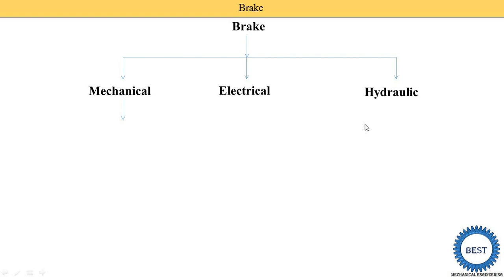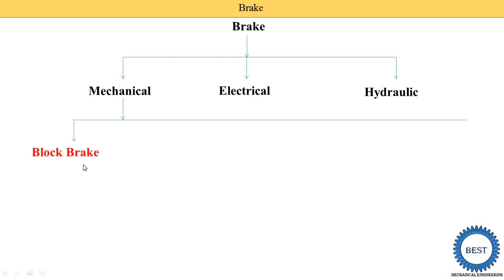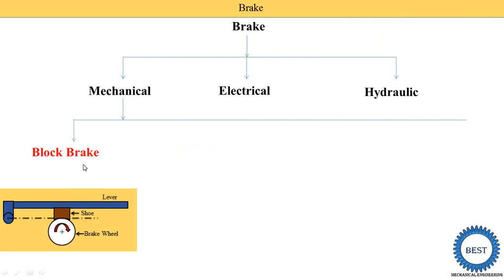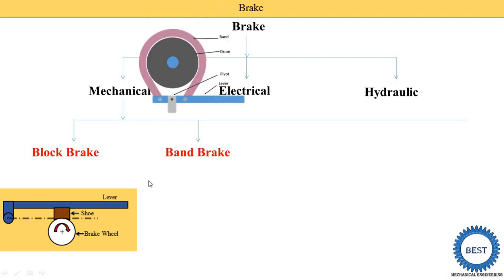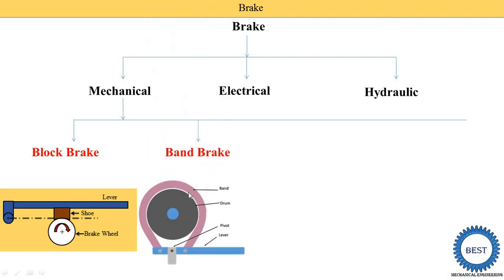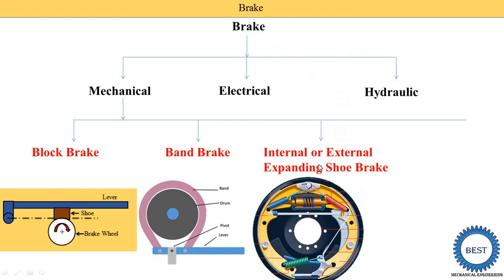Here we are studying the basic mechanical engineering subject, so we are only focused on mechanical brakes. In a mechanical brake, there are four types: the first one is the block brake or shoe brake, where a shoe is used; the second one is the band brake; the third one is the internal or external expanding shoe brake; and the fourth one is the disc brake.